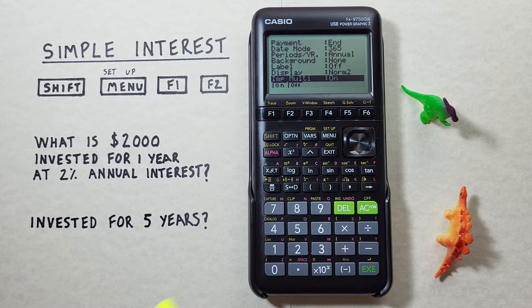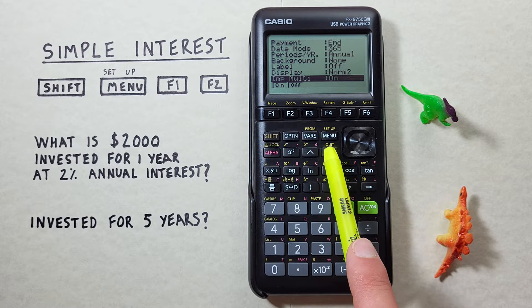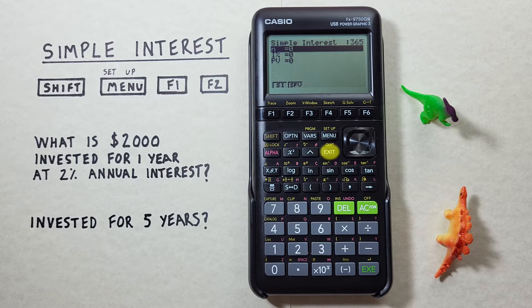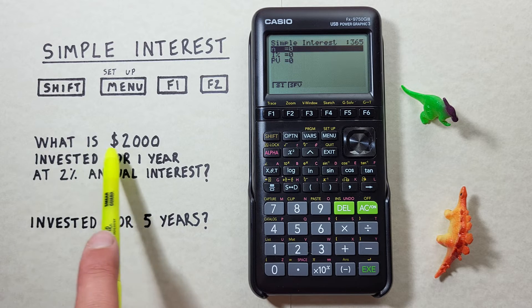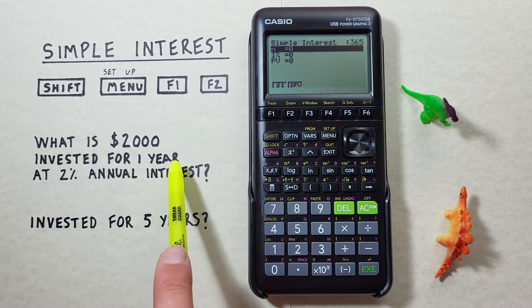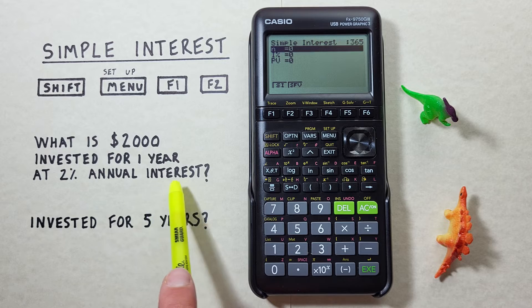Since we don't need to change anything here we can hit exit. Now we can go ahead and do our calculation. So our first example will be what is $2,000 invested for one year at 2% annual interest.